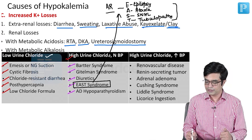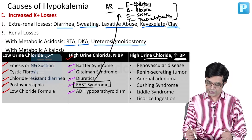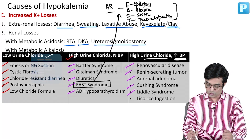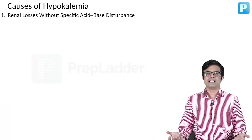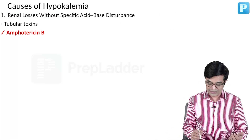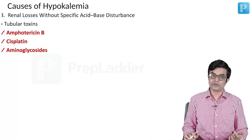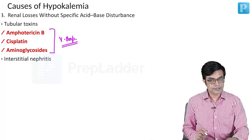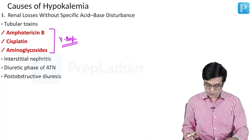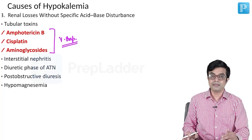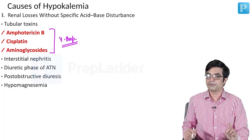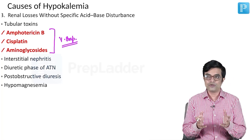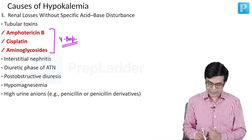Third category is high urine chloride with raised BP — hypertensive patients — including renal vascular disease, renin-secreting tumor, adrenal adenoma, Cushing syndrome, Liddle syndrome, and licorice ingestion. Renal losses without any acid-base imbalance include tubular toxins — amphotericin B, cisplatin, and aminoglycosides — which are very important. It can also occur in interstitial nephritis, diuretic phase of ATN, post-obstructive diuresis, hypomagnesemia — so always check magnesium levels when correcting hypokalemia — and high urine anions like penicillin or penicillin derivatives.